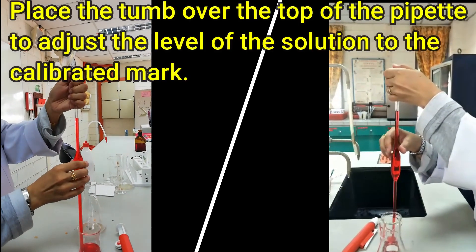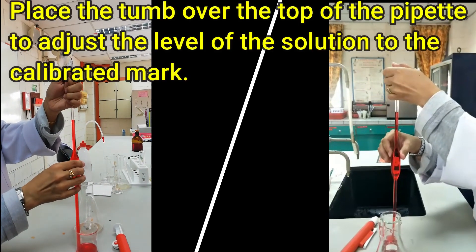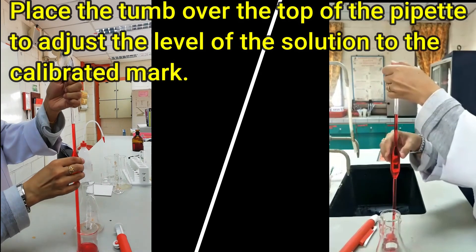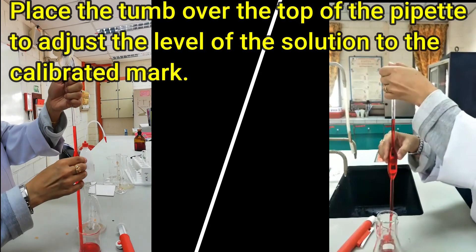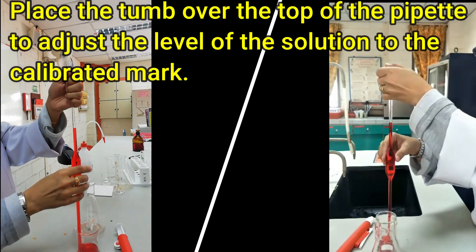Place the index finger or the thumb over the top of the pipette to adjust the level of the solution to the calibrated mark.